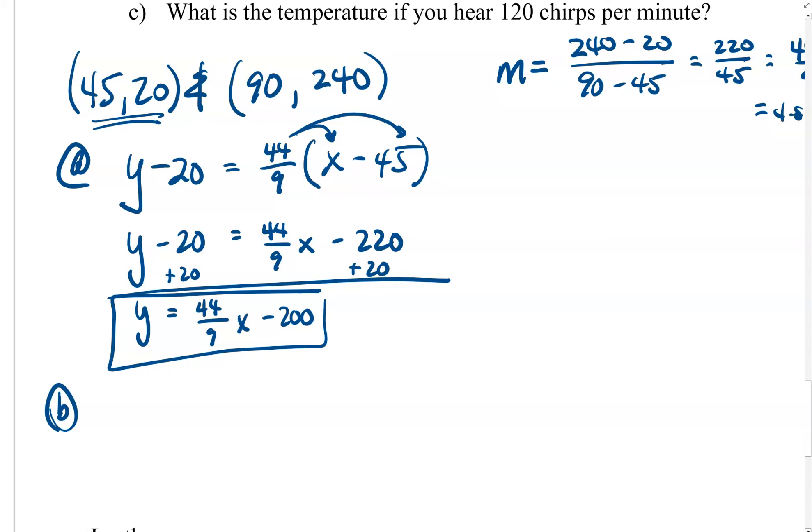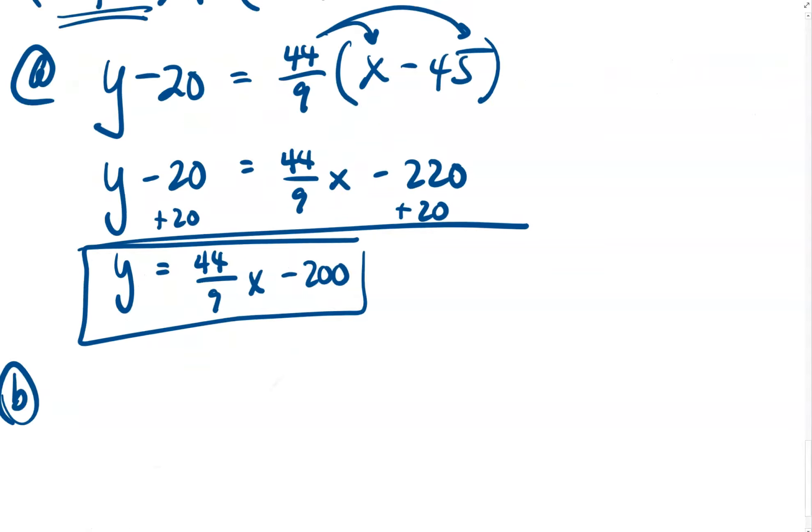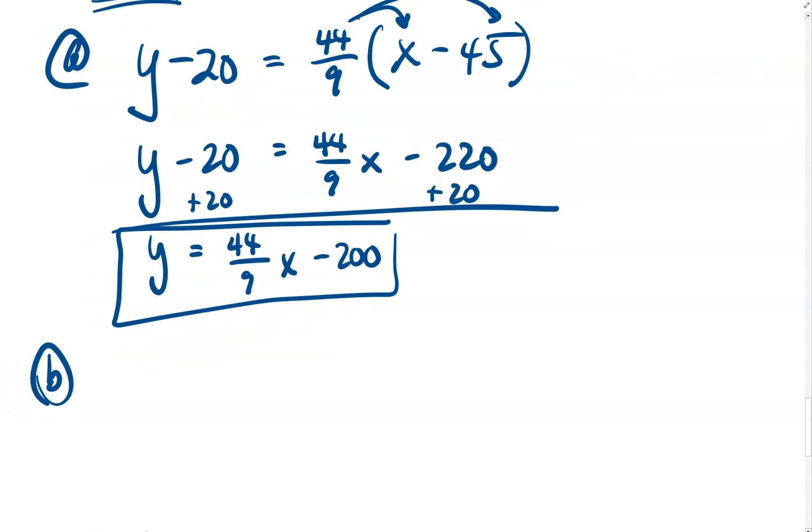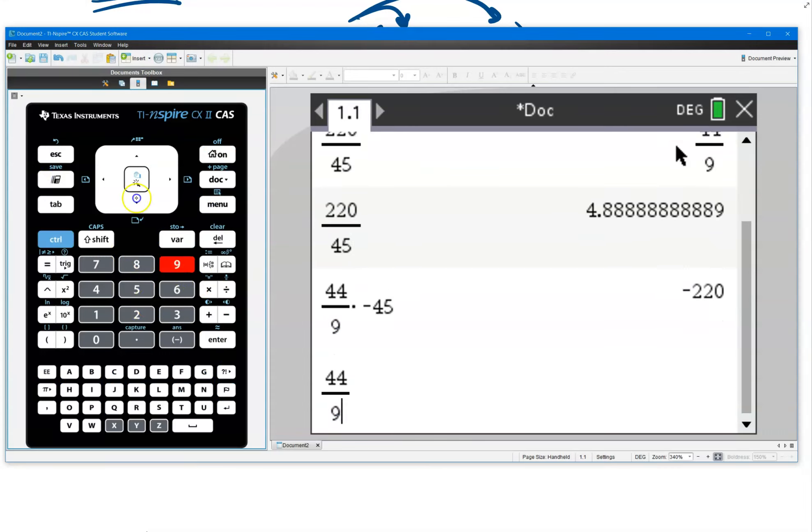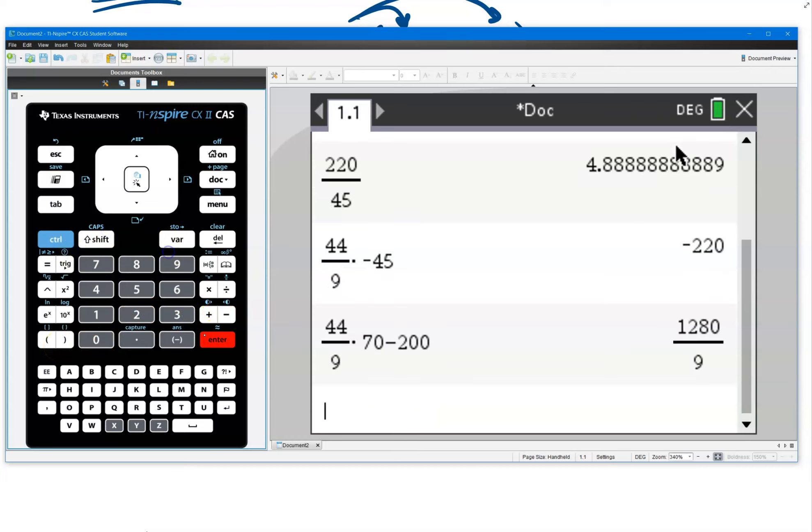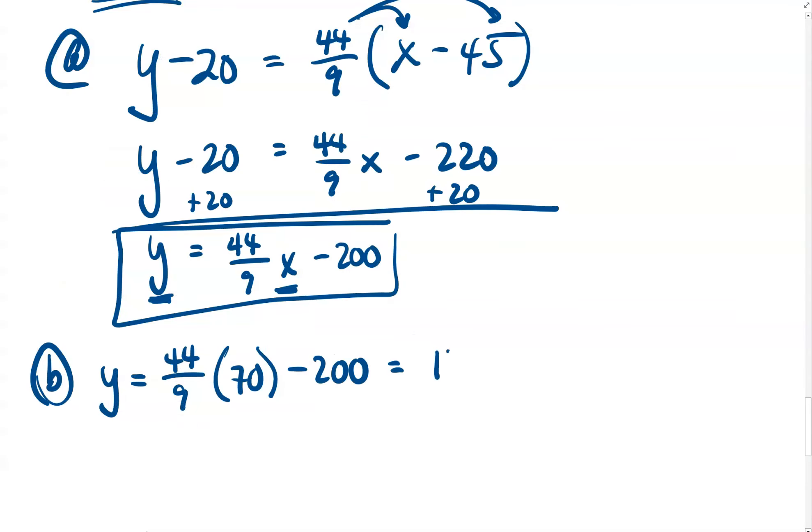This is helpful for us because now we can answer the question, how many chirps would you expect to hear if the temperature is 70 degrees? Well, temperature is our independent variable. Number of chirps is our dependent variable. So we can report that the number of chirps, y, would be equal to 44 ninths times 70 degrees temperature minus 200. Using our calculator, we can obtain that result pretty easily as well. 44 ninths times 70 minus 200 is this value here. Now that's not very meaningful for me, 1,280 divided by 9. So I'll press Control-Enter, and I'll get a result here of about 142.2 chirps per minute.